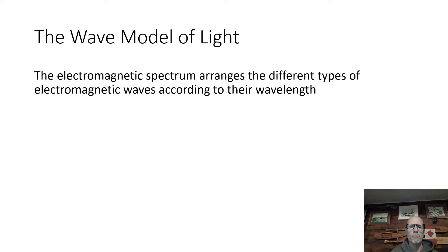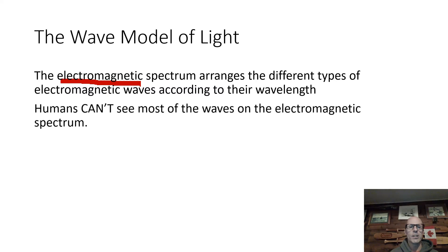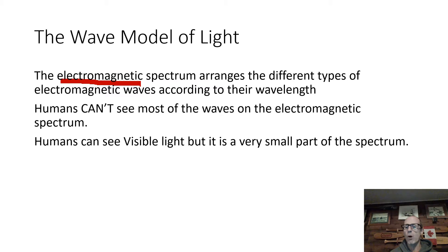The electromagnetic spectrum arranges the different types of waves according to their wavelength. Some of these waves you've seen before or heard of. Humans can't see most of the waves in the electromagnetic spectrum. To be honest, we only see very few wavelengths that are out there in Mother Nature. We can only see a very small part of the spectrum.